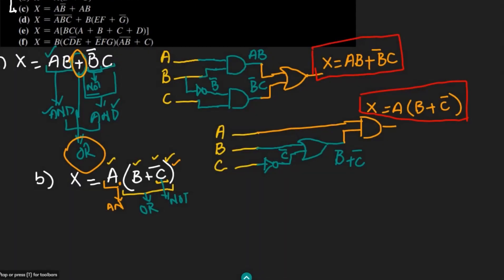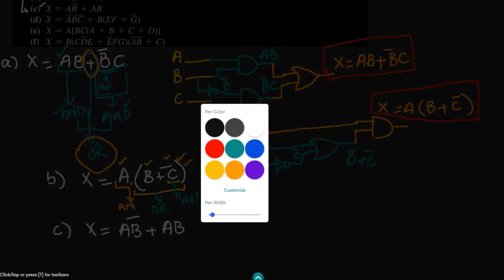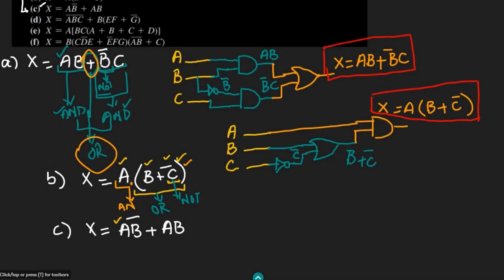For part C, the expression is X equal to AB complement plus AB. I follow the same procedure — I check how many inputs I have. There are two inputs: A and B. A and B complement are multiplied together in one term, and A and B are multiplied together in the other. I use a NOT gate for B complement.